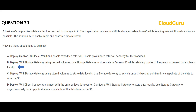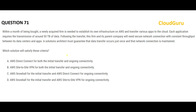Please pause the video and read the next question carefully. A firm needs to establish infrastructure on AWS and transfer all applications — each requiring transmission of around 50 terabytes of data. Once transfer is complete, they need a secure network connection with constant throughput between the data centers and the apps. The requirement is a one-time data transfer, after which ongoing network connectivity must be maintained.